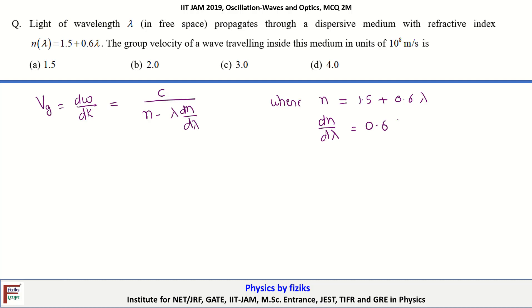We can put this value back in this equation. We are going to have vg equal to c upon n value is 1.5 plus 0.6 lambda minus lambda into 0.6.